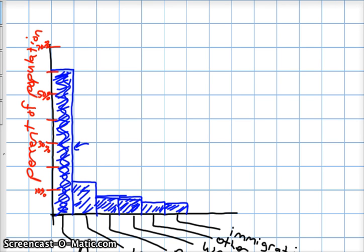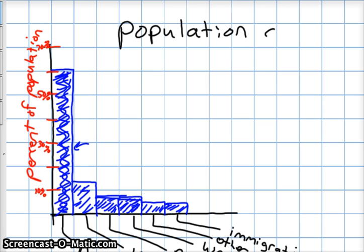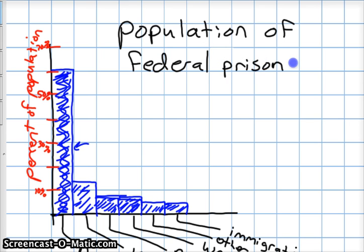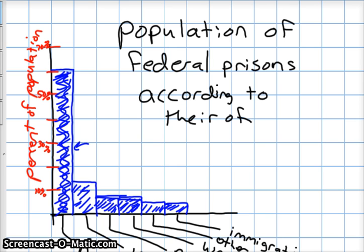The other thing — we need a title for this. This is: Population of Federal Prisons According to Their Offense. So you always want to label, you always want a title on your graph. Be as descriptive as you can be.